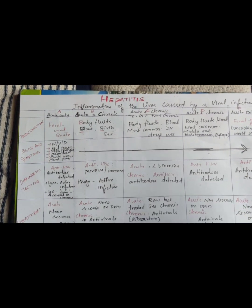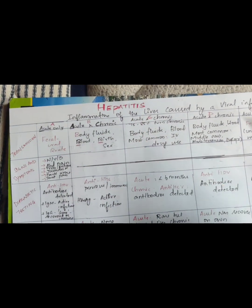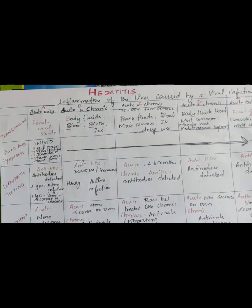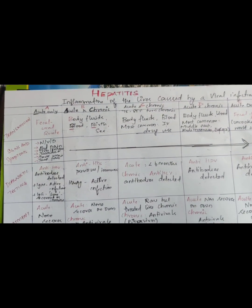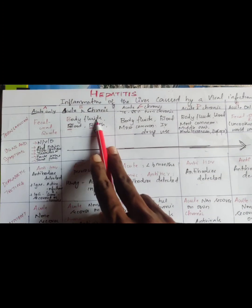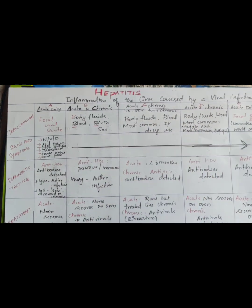So first, hepatitis. Hepatitis is inflammation of the liver caused by a viral infection. If it is affected by the liver, it is affected by a viral infection. For hepatitis A, B, C, D, E, this is my classification.